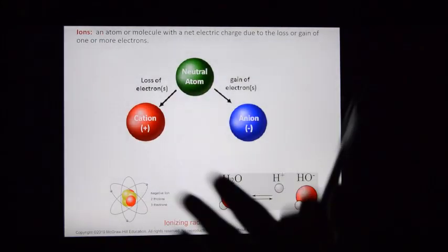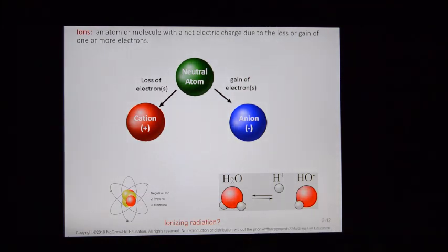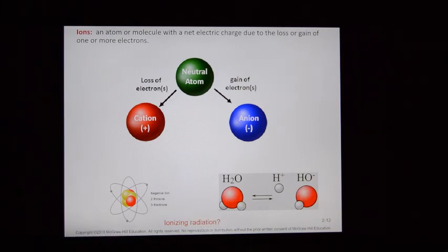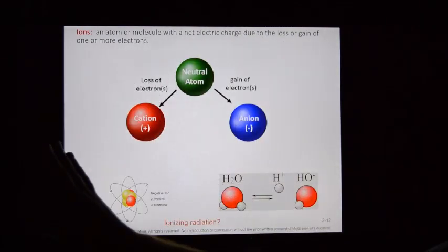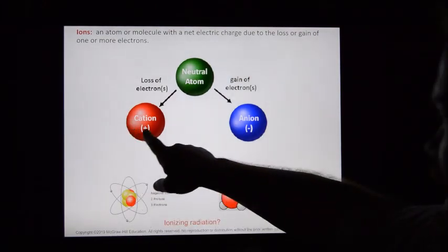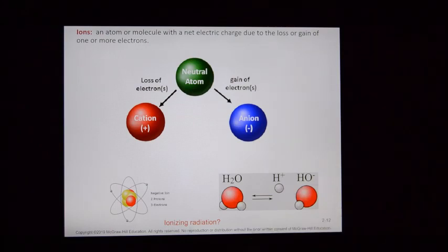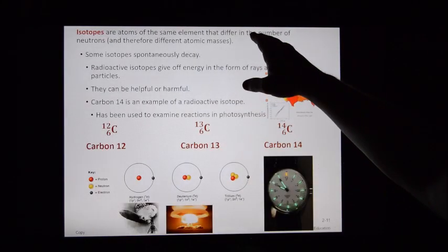Ions are present when there is a gain or loss of electrons. If an atom gains a negatively charged electron, that atom becomes overall negatively charged — what we call anionic. If it loses an electron, there are more protons than electrons, so the atom becomes overall positively charged — referred to as a cation. If it gains or loses an electron, it's an ion. If it's got a random number of neutrons, it is an isotope.